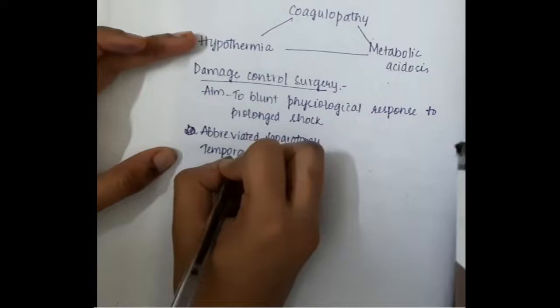In order to address the instability, you are not treating the primary pathology. You are just exploring the abdomen — checking for any hemorrhage, contamination, or necrotic tissue. If there is any, you will remove it, but you are not going to remove the primary pathology. That is what is seen in damage controlled surgery.